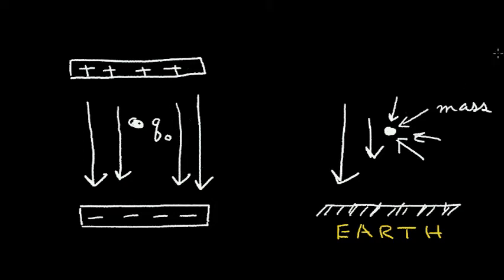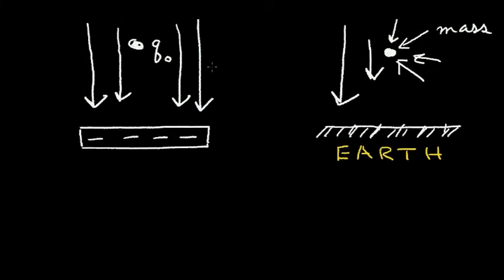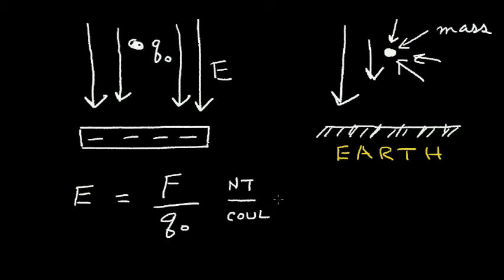So if we write an equation for this electric field, I'll call it E for electric field. This electric field is equal to the force on this small charge, which we'll call Q-zero. And force is in the units of Newtons, and charge is in the unit of Coulombs.